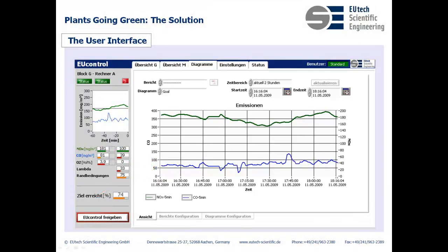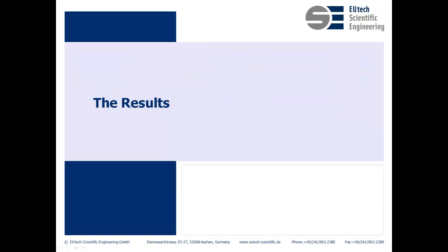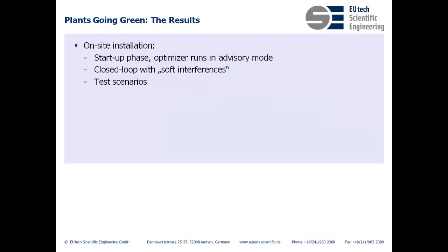That concludes our overview of the solution. Now let's look at the results. In the earliest phase, the optimizer runs in advisory mode, where no automatic optimization takes place. Then, for the first closed-loop operation, we adjust the parameters and settings so that the optimization leads only to soft interferences with the boiler operation. After that, planned test scenarios are carried out. In essence, the complete functionality is switched on step-by-step, validated and fine-tuned on the way.